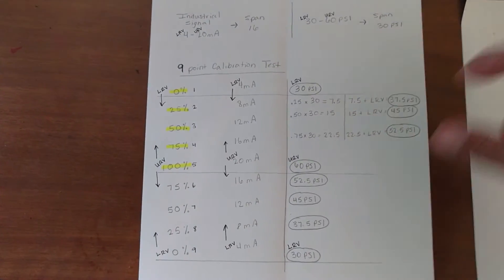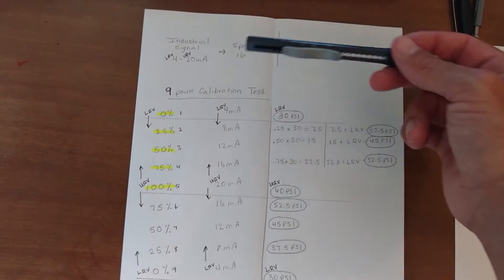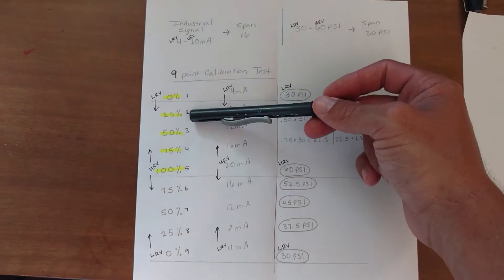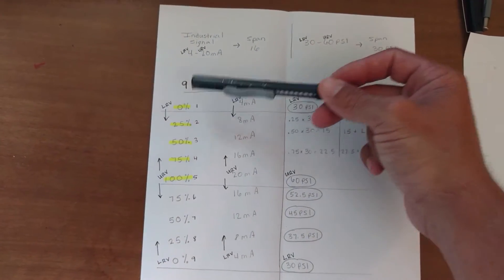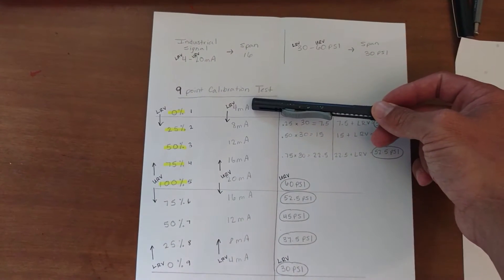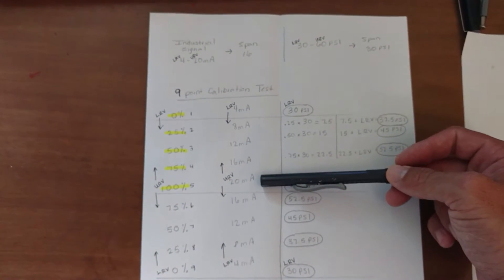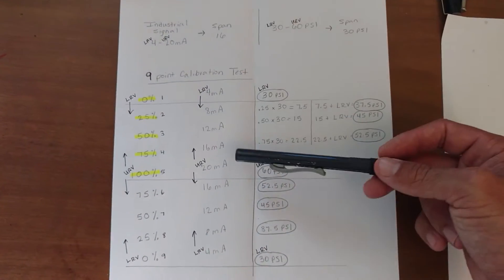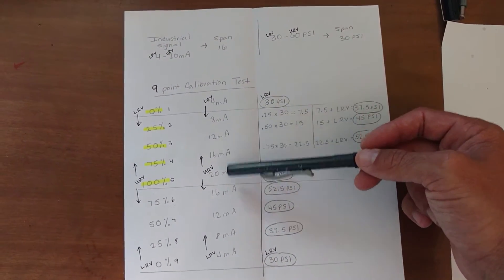Anytime we have a transmitter, we're going to be using our industrial signal to represent each of these percentages of our span. So 0% of our span, a 4 milliamp signal is going to be sent out from our transmitter. And at maximum percent of our span, a 20 milliamp signal is going to get sent. And at 25%, so on and so forth.